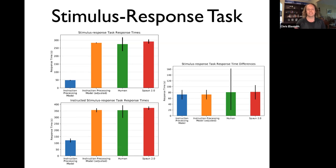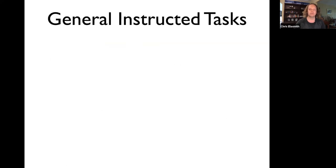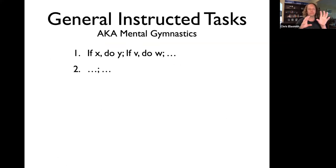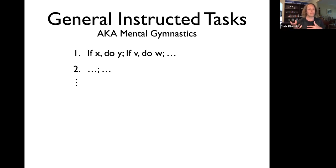One challenge with adding something like instruction following is that we have a big brain model but not a lot of brain data in this context. What I'll show from now on is really just exploring the sophistication of this model — we don't have direct comparisons yet to any particular brain data. I like to think of this as a kind of mental gymnastics where you give a series of instructions and the model goes through them, either internally or writing out answers halfway through, and the instructions can be fairly sophisticated and build on one another.